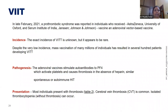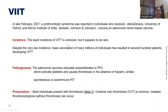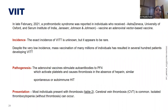Next is vaccine-induced immune thrombocytopenia and thrombosis (VITT). In late February 2021, a prothrombotic syndrome was reported in individuals who received vaccines from AstraZeneca, the Serum Institute of India, and Janssen (Johnson and Johnson) — all adenoviral vector-based vaccines. The incidence is rare and not well documented, but during mass vaccination worldwide, even two or three cases were significant because they occurred at a single time point.